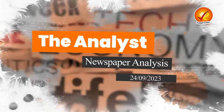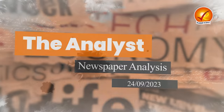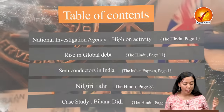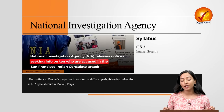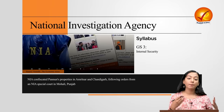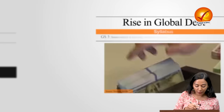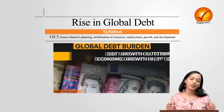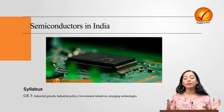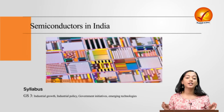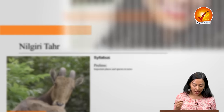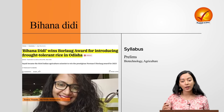Welcome everyone to the analysis of 24th September, where we bring in-depth analysis of important articles from The Hindu and Indian Express. Today's table of contents covers: the working of the National Investigation Agency regarding Manipur militancy and Khalistan controversy; the rise in global debt; the semiconductor industry in India; the endangered Nilgiri Tahr; and a case study of Bihona Didi, Swati Nayak, winner of the Norman Borlaug Award.